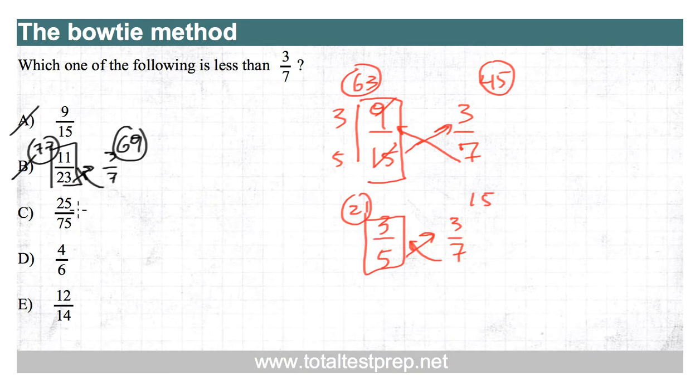25 seventy-fifths. Here, I do want to reduce because I don't want to be multiplying by 25 or 75. 25 divided by 75 reduces to one-third. One-third then compared to three-sevenths. We can use the bowtie method. Three times three is nine. Seven times one is seven. As you see, I always circle these just to keep track of what those products are. Seven is less than nine, which means that one-third is less than three-sevenths. So this is our correct answer.